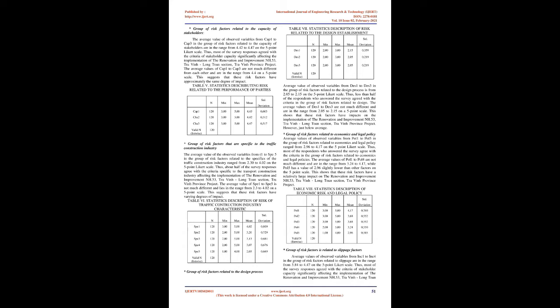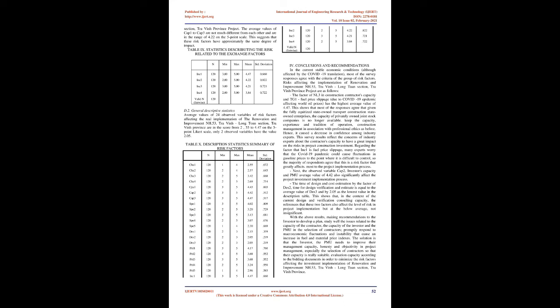Descriptive Statistics by Group of Factors: For the group of risk factors related to project characteristics, the average values of the observed variables from CHA1 to CHA4 are in the range from 2.5 to less than 4 on the 5-point Likert scale. Thus, more than half of the respondents agreed with the criteria in this group. The average values of CHA1 to CHA4 are not much different and are in the range from 2.5 to 3.5, showing that these risk factors have impacts on the project implementation, but just above average.